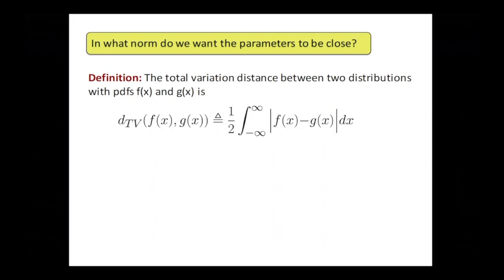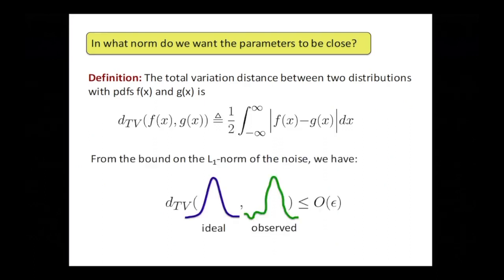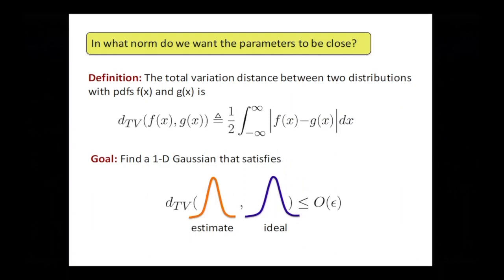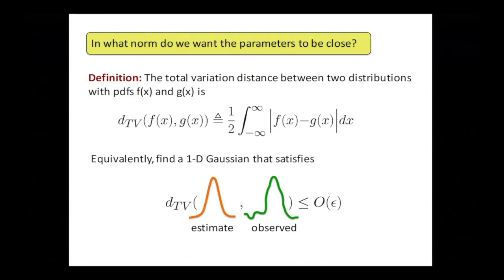There's something called total variation distance — half of the L1 distance between the PDFs. The adversary is allowed to create any other distribution that's about epsilon far in total variation from the ideal model. So if this is the norm measuring how much the adversary can change our problem, it's also the natural norm for our goal: given something that's epsilon close to being a Gaussian, can we find an estimate that's about epsilon close to the original uncorrupted thing? Now — do the empirical mean and empirical variance work in the presence of noise?